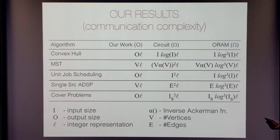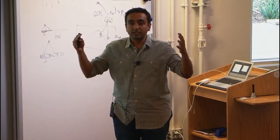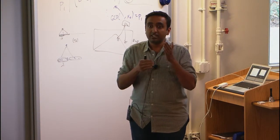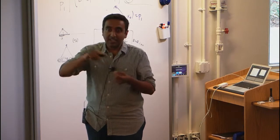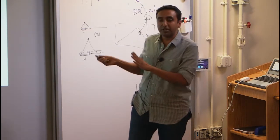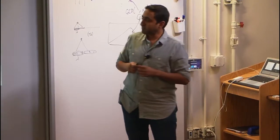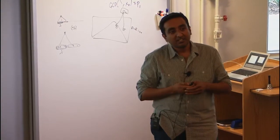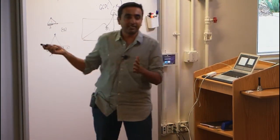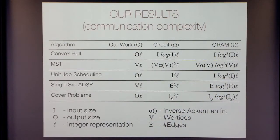In essence, to summarize the results table in one line: we achieve close to what the insecure communication complexity would be for each of these cases. The communication complexity we achieve is actually proportional to the output length. For instance, take the convex hull — if O is the output size, the number of elements in the convex hull, our communication complexity is proportional to that. The circuit and ORAM approaches either depend on the input size or have some polylog factors.